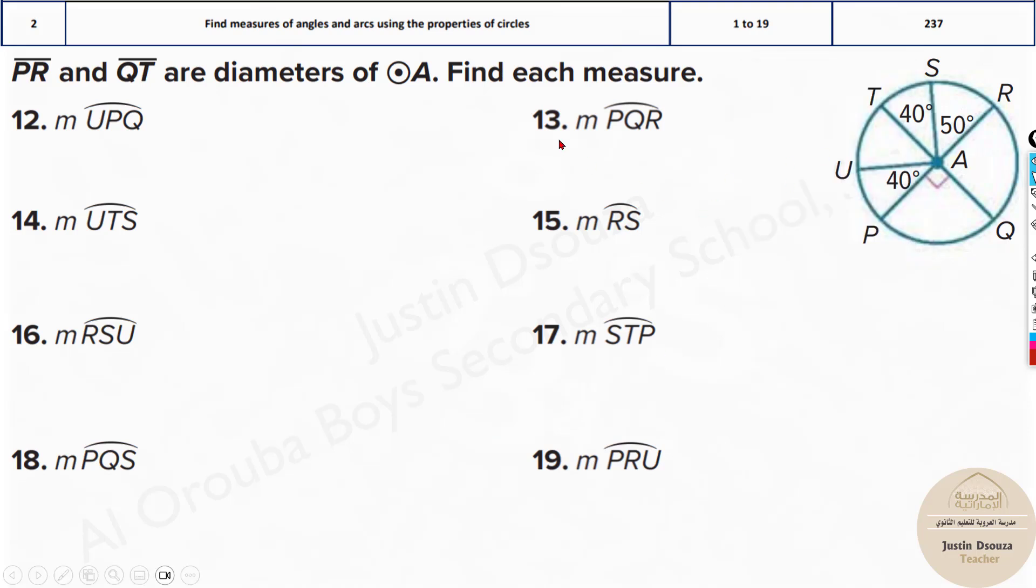Now we have another problem where they have given some details. PR and QT are the diameters. Now we need to find these measures. What is UPQ? UPQ is this. It's 90 plus 40, 130.